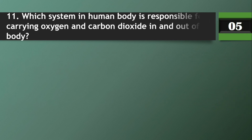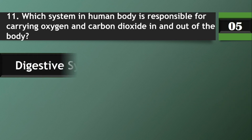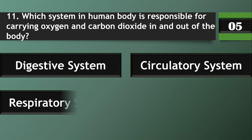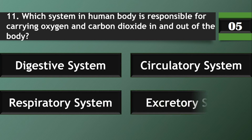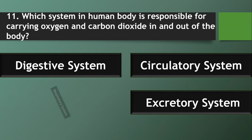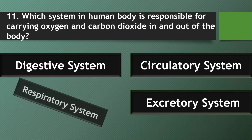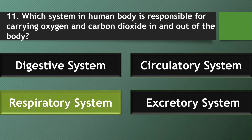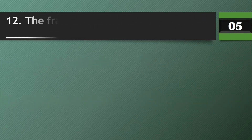Question 11: Which system in the human body is responsible for carrying oxygen and carbon dioxide in and out of the body? Answer: Respiratory system.